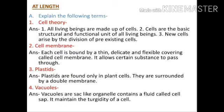Next are the long questions. Section A: explain the following terms. Question one: cell theory. Points of cell theory — (1) all living beings are made up of cells; (2) cells are the basic structural and functional unit of all living beings; (3) new cells arise by the division of pre-existing cells.